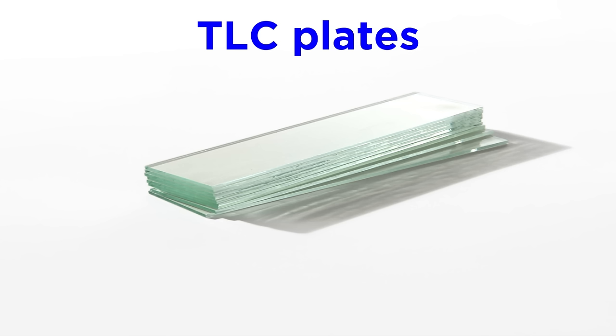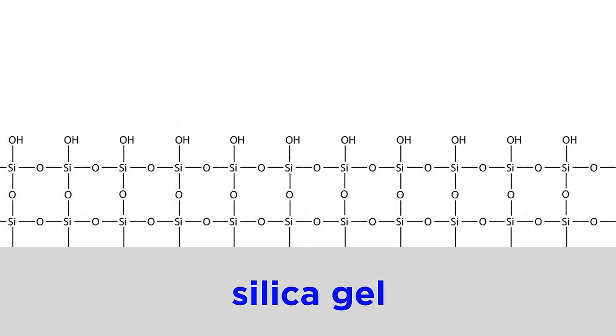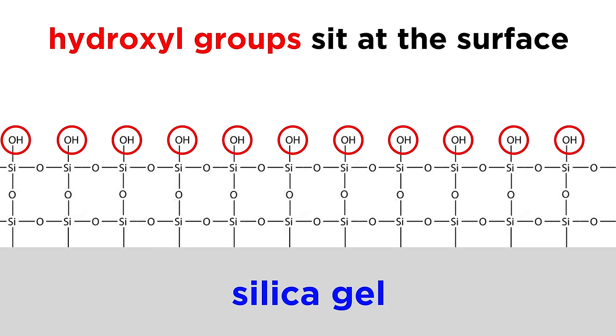In order to do TLC, we will need some TLC plates. These have a thin layer of silica gel spread out on a glass surface. It will be important to understand the structure of this silicate material, as this is what will cause the components of the mixture to separate. It is a network solid of silicon dioxide, with alternating silicon and oxygen atoms in every direction, and at the surface of this material there will sit many hydroxyl groups.